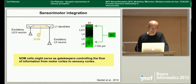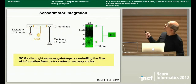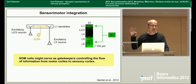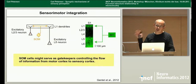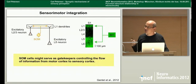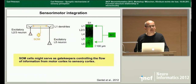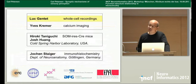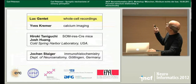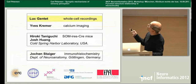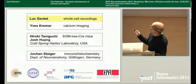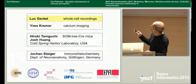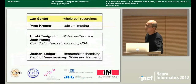In other sensory cortices, somatostatin neurons may be involved in regulating top-down feedback more generally. We think of this M1 signal as a top-down signal, and many other brain areas receive top-down input. Somatostatin cells could be playing a similar role in other brain areas. I want to finish by thanking Luc Chante who did all the whole-cell recordings, Yves Kramer who did the calcium imaging, Hiroki Taniguchi and Josh Wang from Cold Spring Harbor who generated the somatostatin Cre mouse line, and Jochen Steiger who helped with immunohistochemistry.